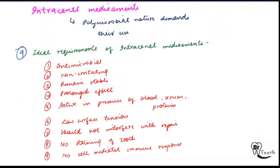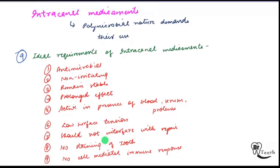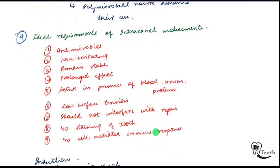Next we will study intracanal medicaments. Why do we need them? We have done cleaning, shaping, and irrigation — but the polymicrobial nature of canal infection demands their use. For example, in cases of weeping canals or very infected canals, you need intracanal medicaments. Ideal requirements: it should be antimicrobial, non-irritating, remain stable, have prolonged effect, and be active in the presence of blood, serum, and proteins.